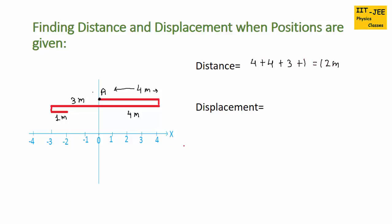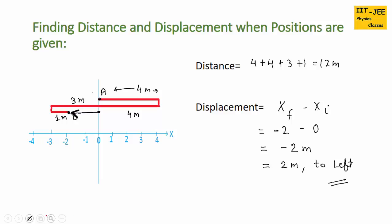Now let's find the displacement using the formula xf minus xi — position of the final point minus position of the initial point. The final point is B at position minus 2, and the starting point A is at position 0. So minus 2 minus 0 equals minus 2. The negative sign shows the direction, which is towards the left. So displacement is 2 meters towards the left.